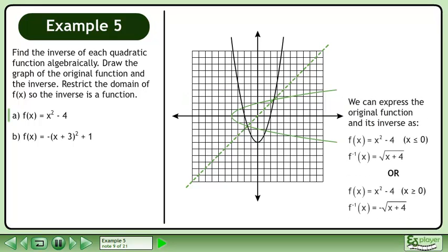We can express the original function and its inverse as shown. The first set corresponds to the left arm of the original graph and its inverse, while the second set corresponds to the right arm of the original graph and its inverse.